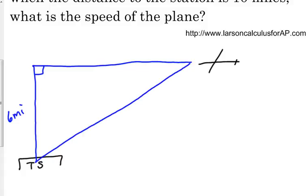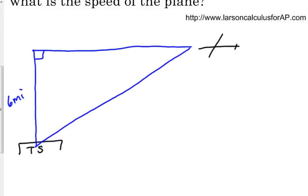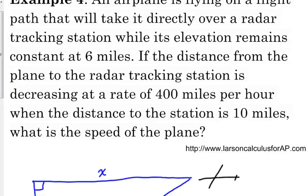It talks about the distance from the plane to the tracking station. Anytime you're talking about a distance, unless they specify otherwise, you're talking about the direct distance from that object to the other object. So that would be that hypotenuse of that right triangle. This is changing, so I need to give it a variable. So distance, we usually use S for distance, and this distance up here, the horizontal distance at the top, is also changing, so I'm going to give it a variable of X. The vertical distance is not changing. That's the height of the airplane that they said was staying constant at 6 miles.